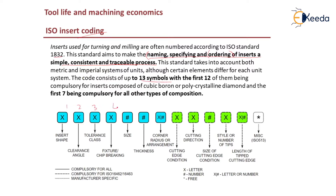The code consists of 13 symbols. The first seven are compulsory for all types of inserts. The first 12 symbols are compulsory for inserts composed of CBN and polycrystalline diamond, as per ISO 16462. The last symbol is left to the manufacturer.